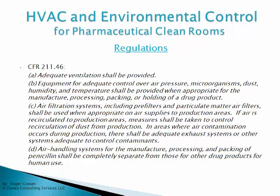There's another GMP reference, CFR 211.46, which states that adequate ventilation shall be provided. Equipment for adequate control over air pressure, microorganisms, dust, humidity and temperature shall be provided when appropriate for the manufacture, processing, packing or holding of a drug product. Air filtration systems, including pre-filters and particulate matter air filters, shall be used when appropriate on air supplies to production areas. If air is recirculated to production areas, measures shall be taken to control recirculation of dust. In areas where air contamination occurs during production, there shall be adequate exhaust systems or other systems adequate to control contaminants.